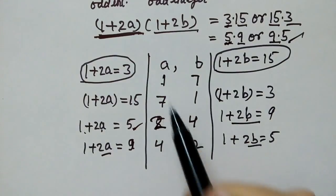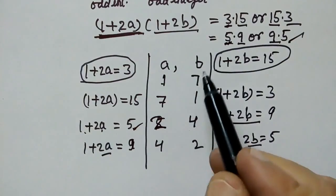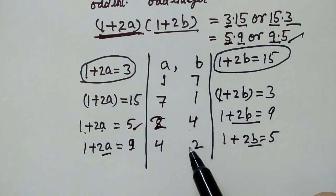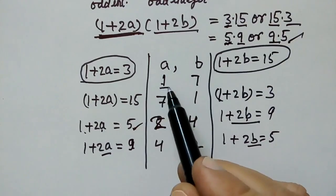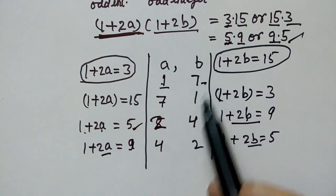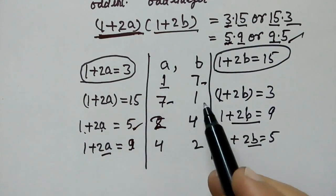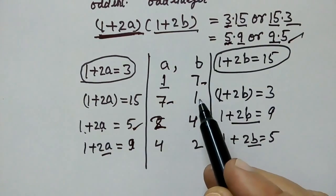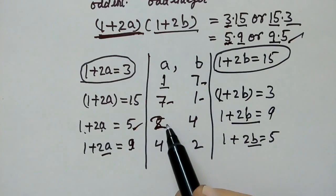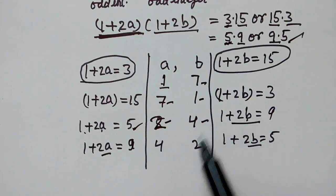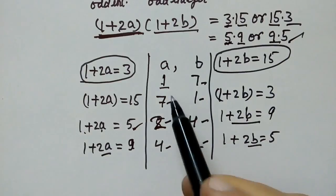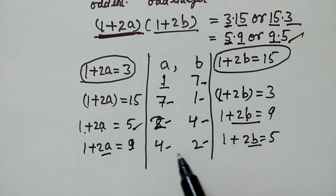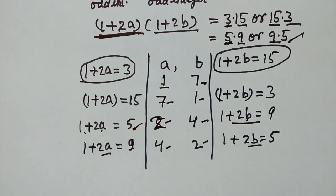Now, the values of a and b are as follows: when a is 1, b will be 7; when a is 7, b will be 1; when a is 2, b will be 4; and when a is 4, b will be 2. The values of a and b have been evaluated. Thank you.